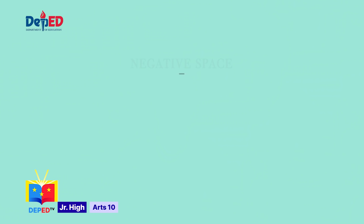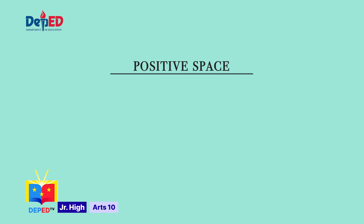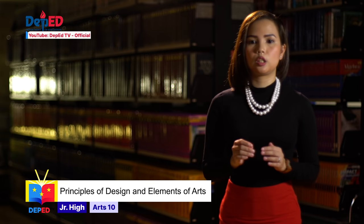The third element is space. Space in a work of art refers to a feeling of depth or three dimensions. It can also refer to the artist's use of the area within the picture plane. The area around the primary objects is known as negative space, while the space occupied by the primary objects is known as positive space. These are the diagrams of clues to spatial depth in a two-dimensional surface.